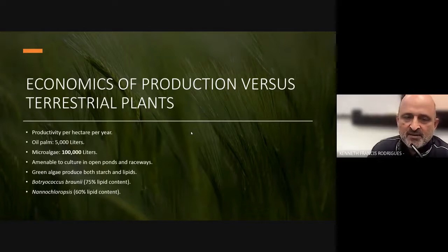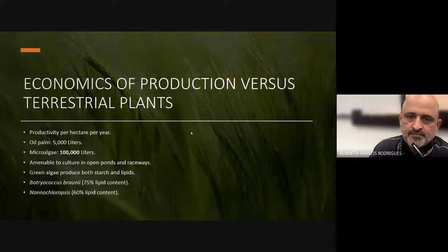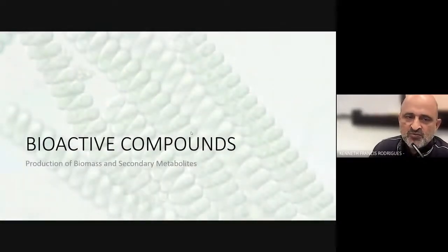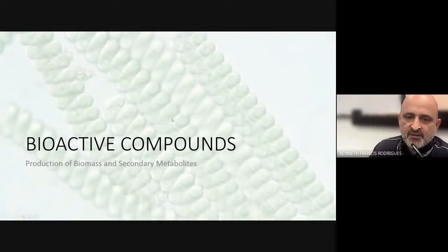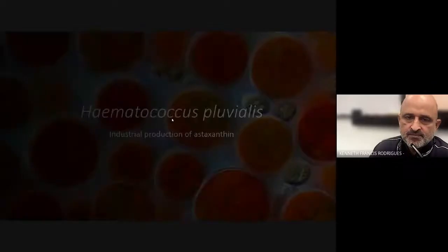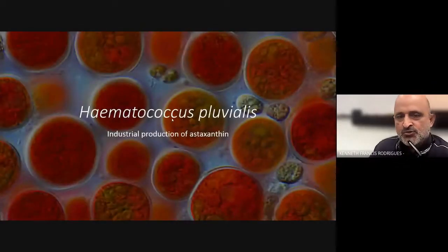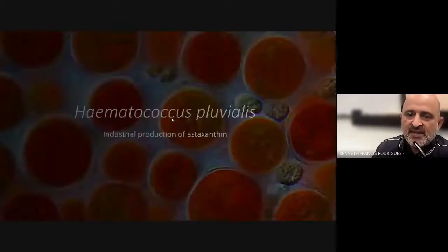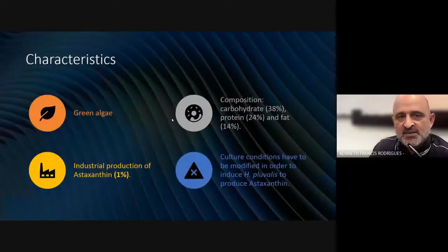Some of the algae which have been utilized for lipid production are Botryococcus braunii and Nannochloropsis. In this particular module, we will be looking at bioactive compounds in the production of biomass and secondary metabolites. I will introduce you to the very well-known algae Haematococcus pluvialis, which is used for the industrial production of astaxanthin. Let us look at some of the basic aspects of this particular algae.